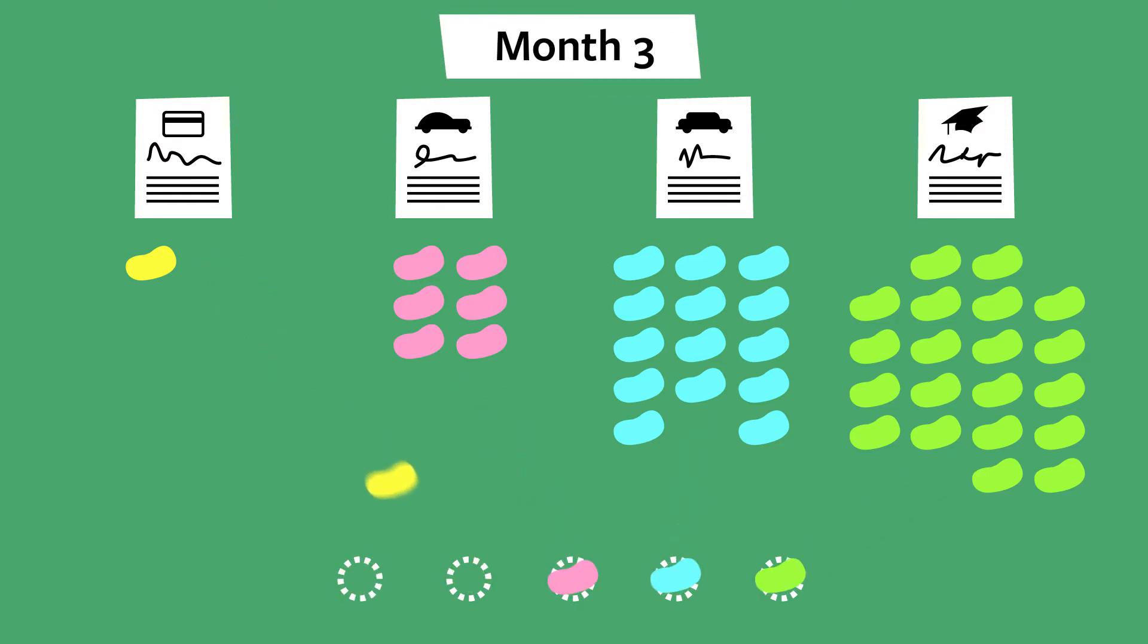In month three, after they pay the minimums on everything, they're able to pay off the credit card. So now they've eaten all the yellow jelly beans from the pile. Yay!